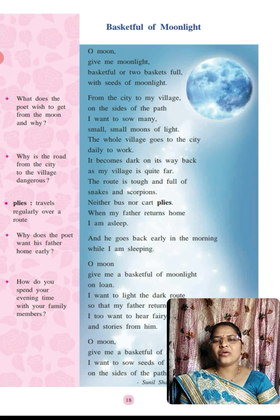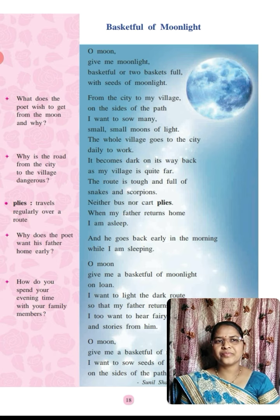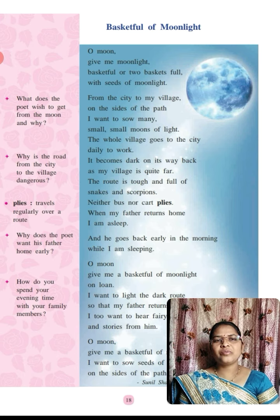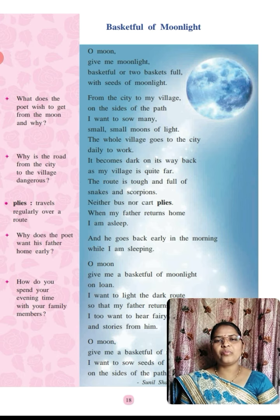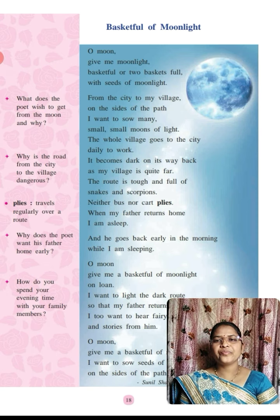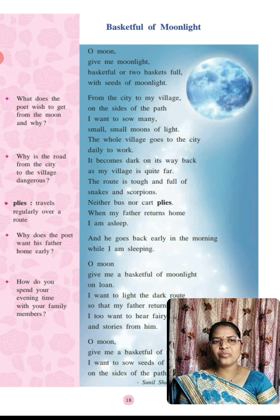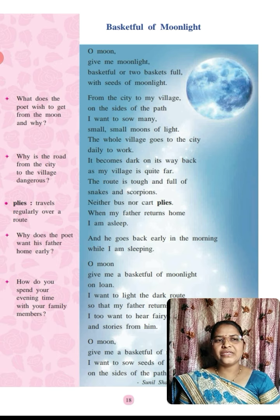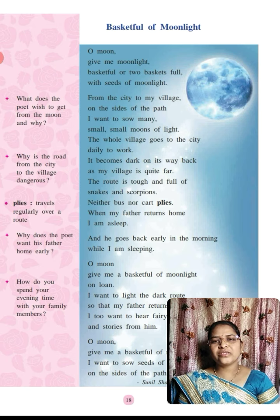The central idea of the poem is the child's desire to spend more time with his father. The child wants to solve the problem of electricity, so he demands the moon, the basketful of moonlight and the seeds of moonlight, and wants to sow that moonlight on the side of the road. The poet throws light on the problems of the village, and depicts an innocent idea through an innocent child very skillfully.